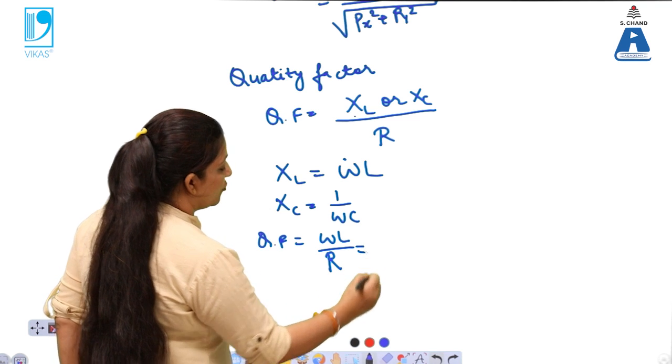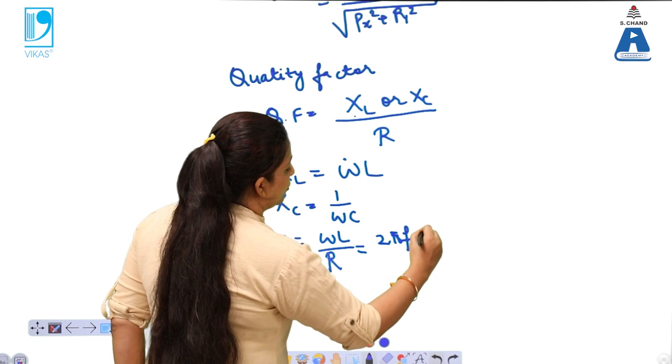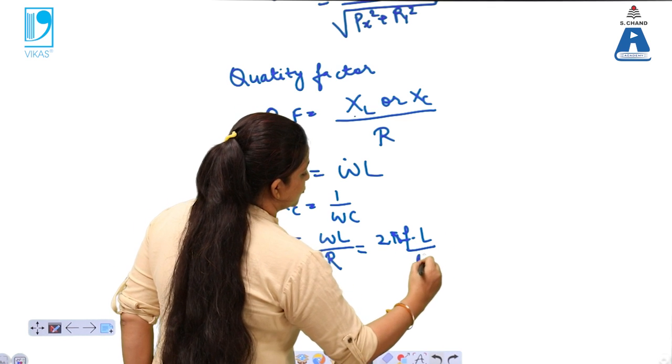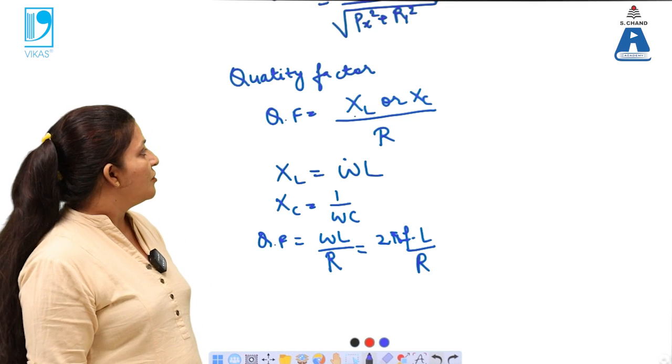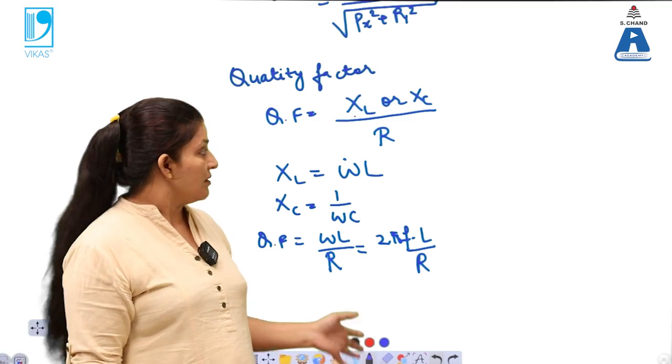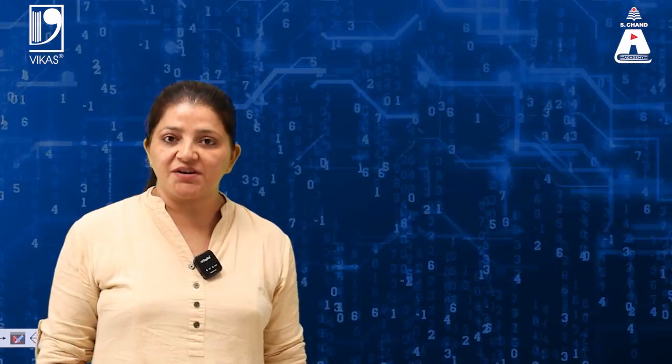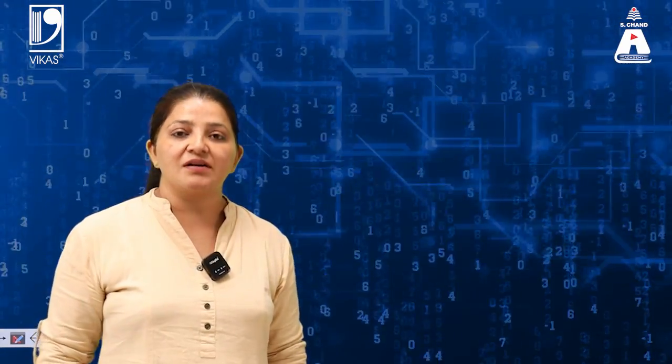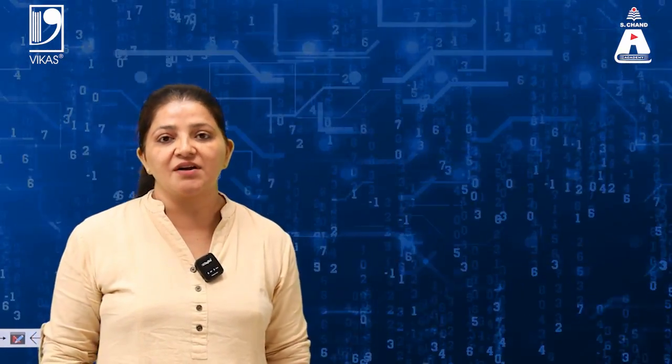So this is the relation which is used in order to calculate the quality factor. In this topic we have studied when the AC circuit contains only the resistance, inductance and capacitance. Then further we have studied the definition and derivations including power factor and quality factor.